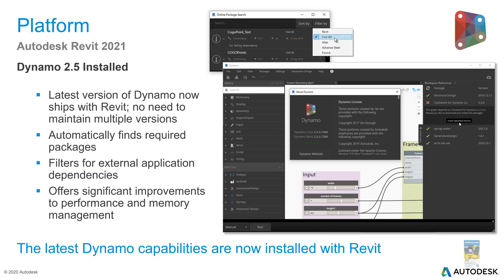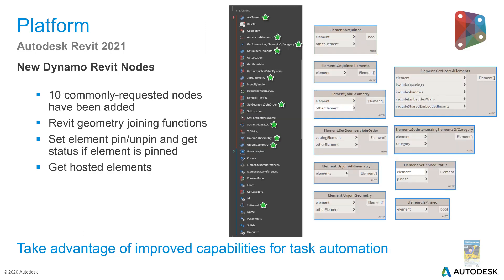For those working with Dynamo, the latest version — Dynamo 2.5 — is installed by default when you work with Revit 2021. They have also introduced a few requested nodes for Dynamo, so when you are working with Dynamo inside Revit 2021, you will see them and can use them.